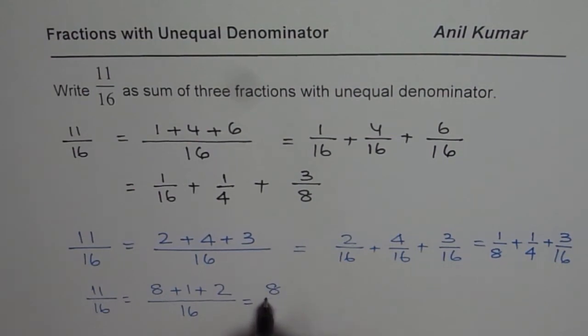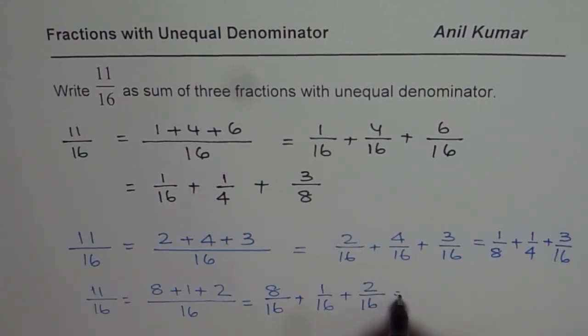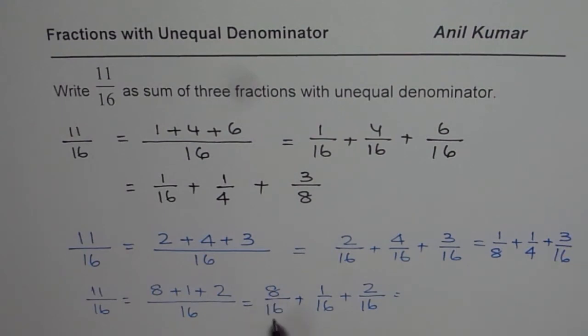So you could write this as 8 over 16 plus 1 over 16 plus 2 over 16. Now write equivalent fractions. You could divide both by 8. So if you divide both by 8, what do you get? You get 1 over 2. Plus this is already 1 over 16. And here you can divide by 2, getting 1 over 8. These three are also fractions with different denominators.